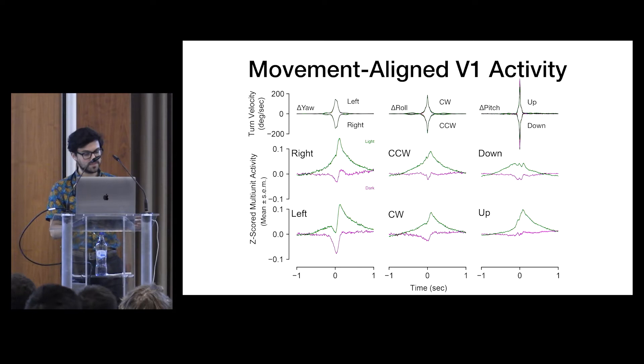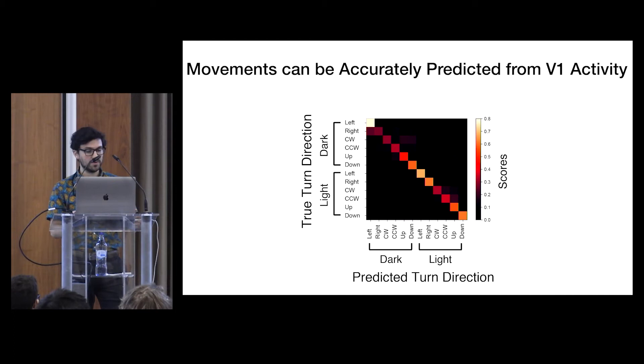So we wanted to see if we could actually predict this turn direction from V1 data, especially in the dark when V1 isn't getting any actual visual flow information. So we decided to use a logistic regression model to see if we could do this. So the logistic regression takes half of our sessions for fitting and the other half for testing. So this is a confusion matrix for the model with the true turn directions on the y-axis and the predicted turns on the x-axis. As you can see, it performs pretty well. It can tell apart not just left from right turns, either in the light or the dark, but also clockwise from counterclockwise tilts, up from down nods, and so on and so forth.